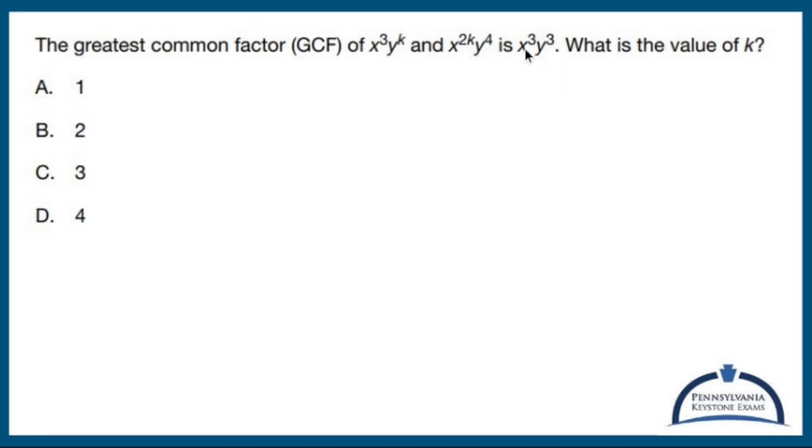Alright, let's compare the x's. My greatest common factor is x³ and x^(2k), and my GCF is x³.